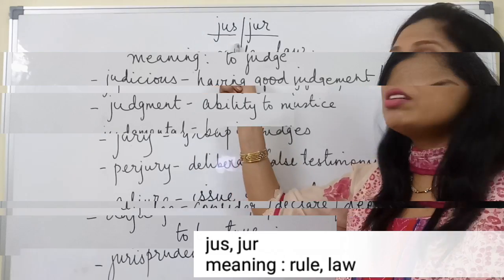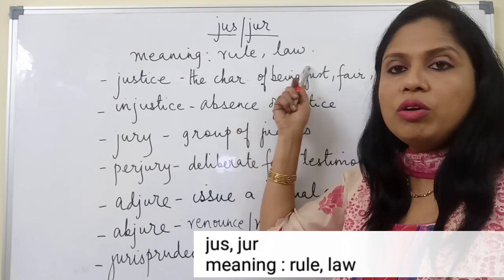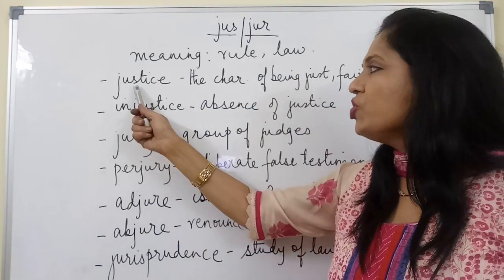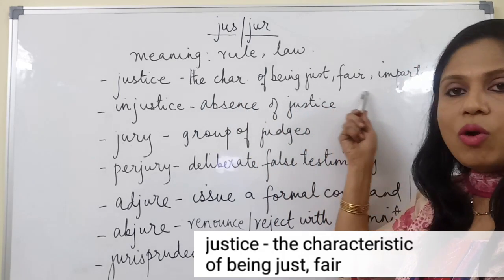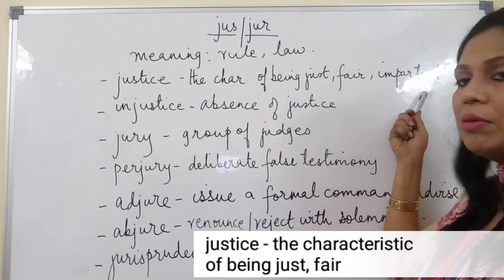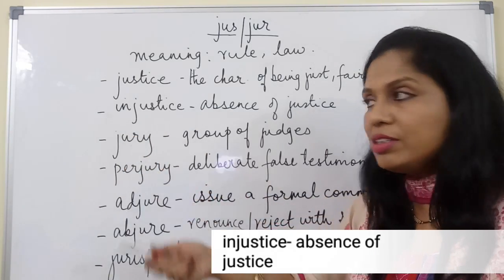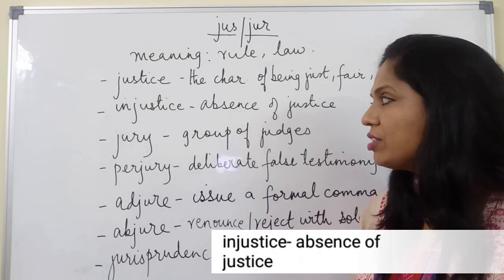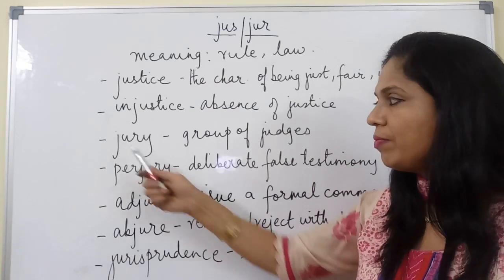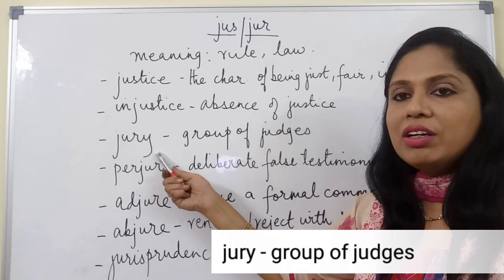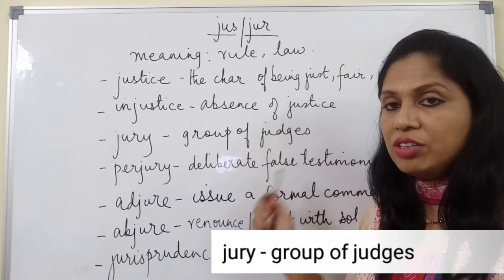The root words 'just' and 'jur' mean rule or law. Justice means the characteristic of being just, fair, or impartial. Injustice means the opposite — it is the antonym of justice. Absence of justice is injustice. The word jury refers to a collection or group of judges.